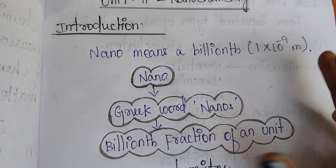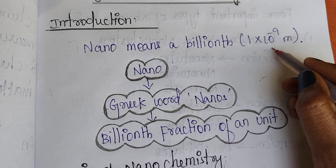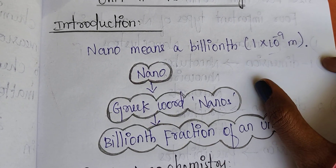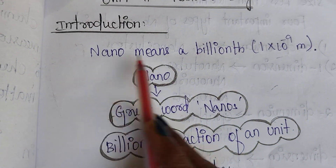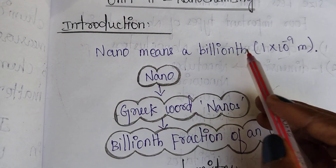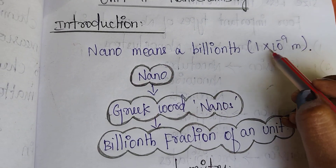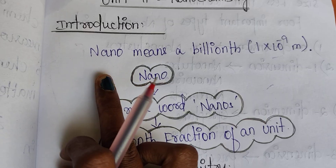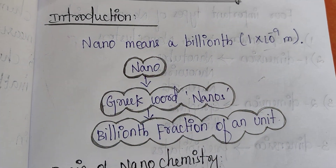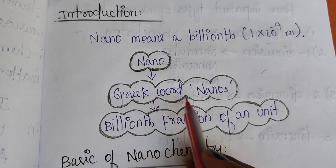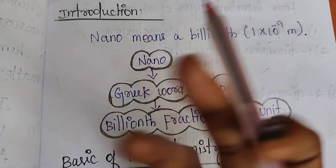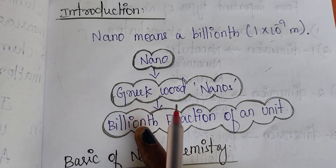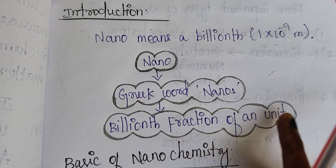We will talk about nano chemistry. Nano means 10 to the power minus 9. Nano is a Greek word, meaning billionth fraction of a unit.